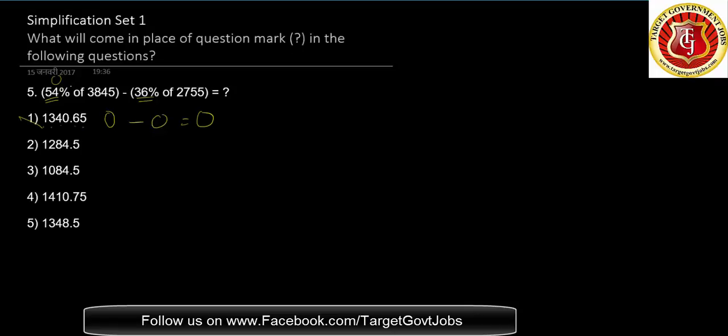1 plus 3 is 4 plus 4 is 8, doesn't give 0. Second option: 1 plus 2 is 3 plus 8 is 11, doesn't give 0. 1 plus 8 is 9 plus 4 is 13 plus 5 is 18, which is 9 equals 0. This option gives the answer.